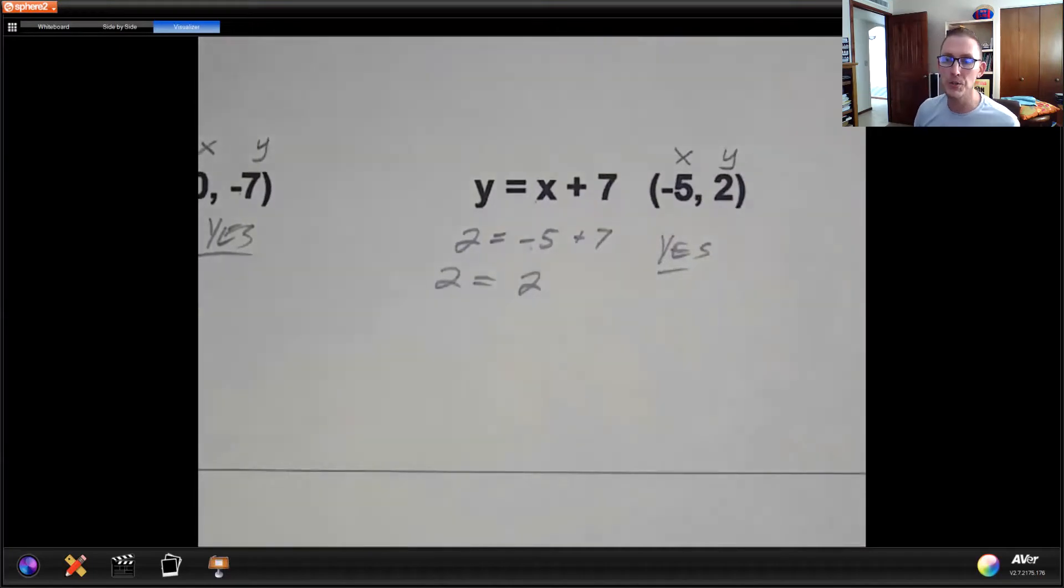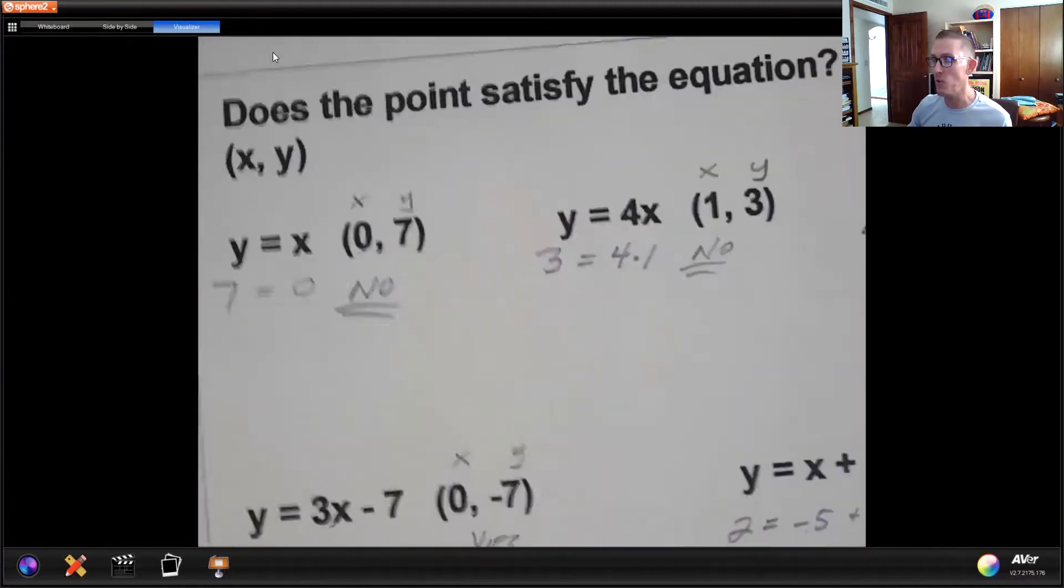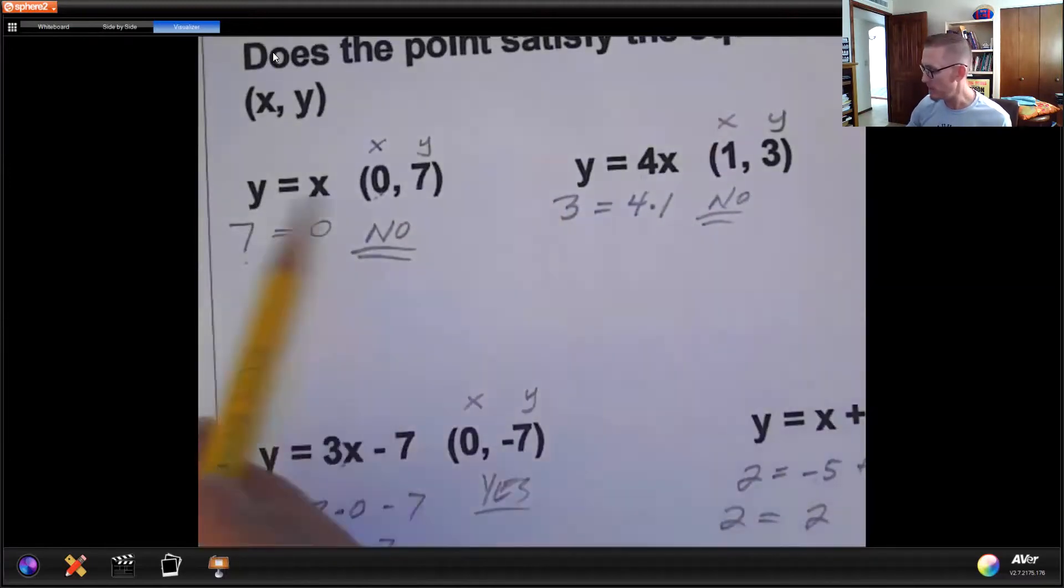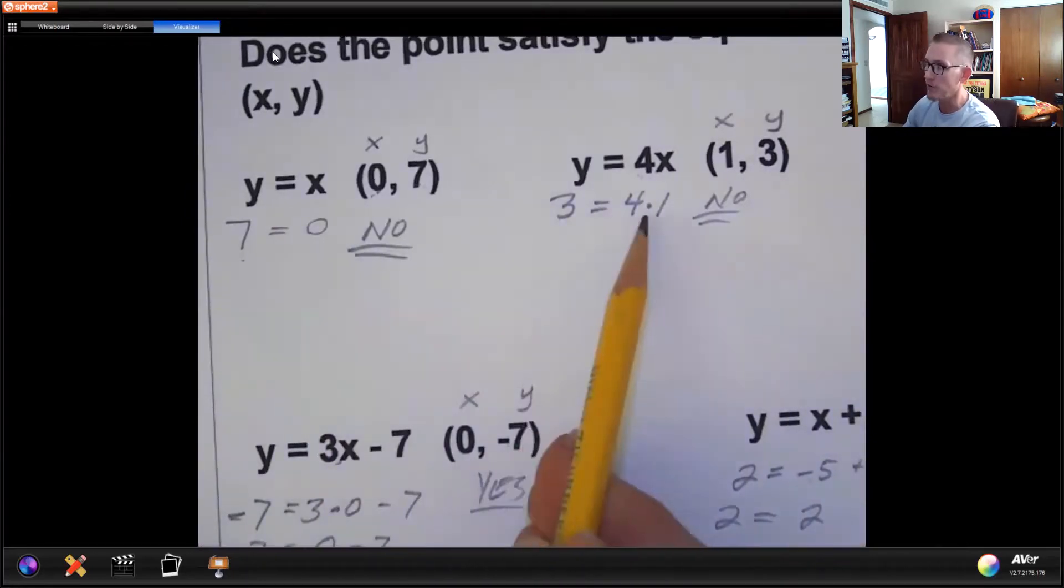So all you're going to do is take that ordered pair and plug it in and then determine whether or not the two sides are equal to each other. So our first two were no because they gave me statements that were not equal. 7 does not equal 0. 3 is not equal to 4 times 1.